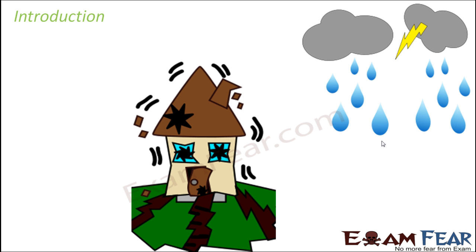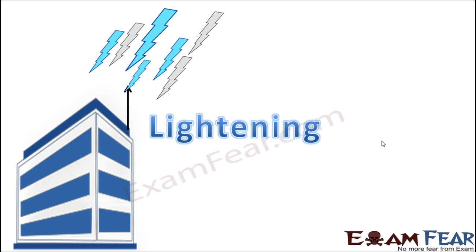We will first start our discussion with lightning. When we talk about lightning, it is very similar to the sparks you see at home — sparks when a wire gets broken, or a spark coming out of an electric socket. These sparks and the lightning you see during rains are similar phenomena. We are going to spend a considerable amount of time understanding the concept of lightning.